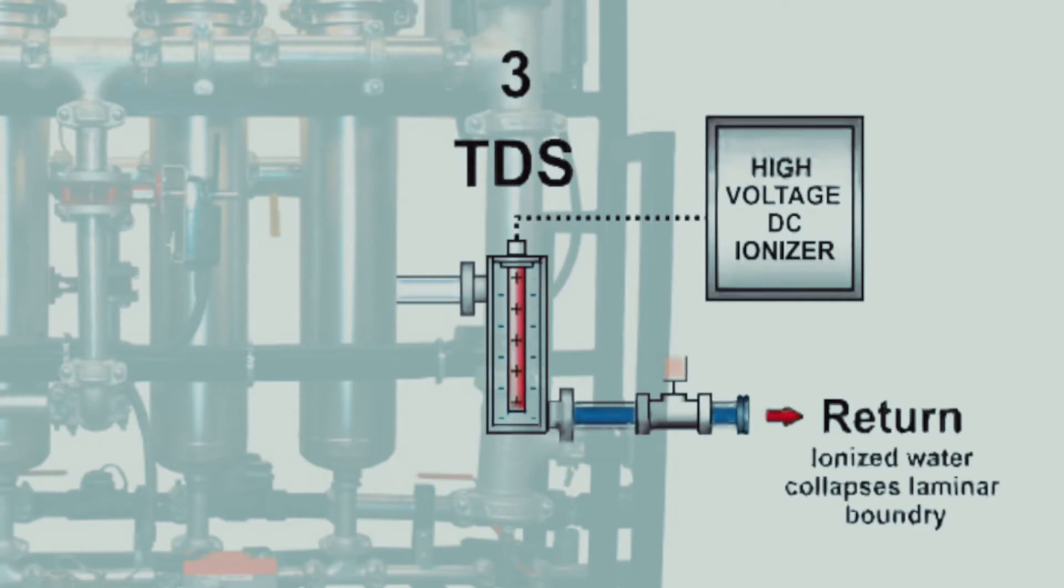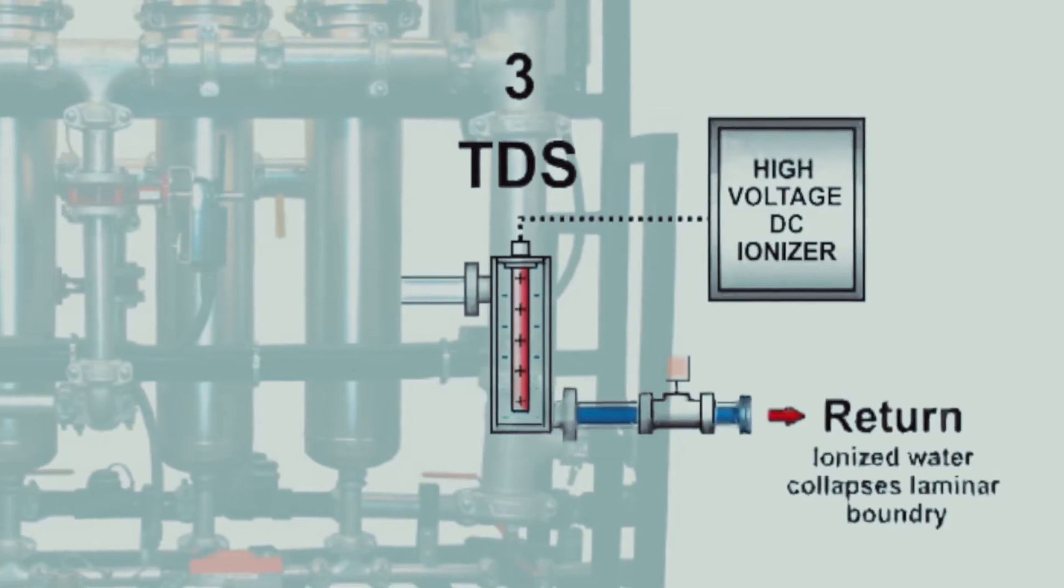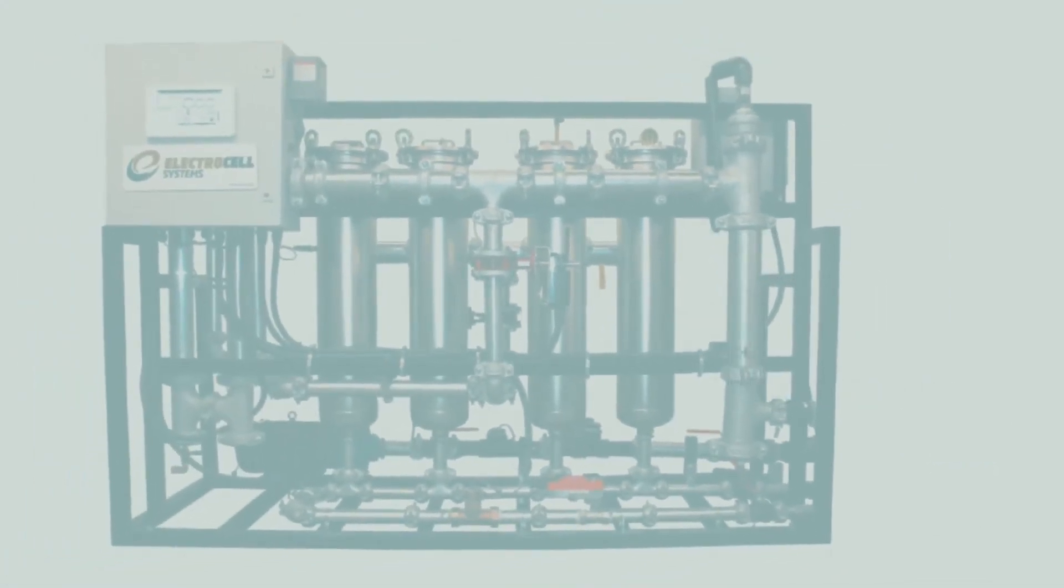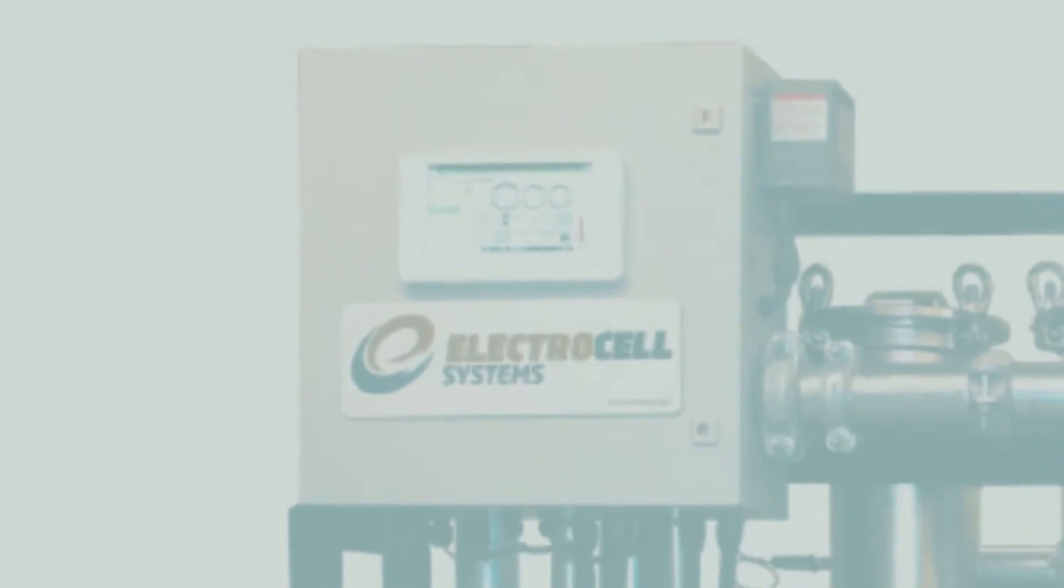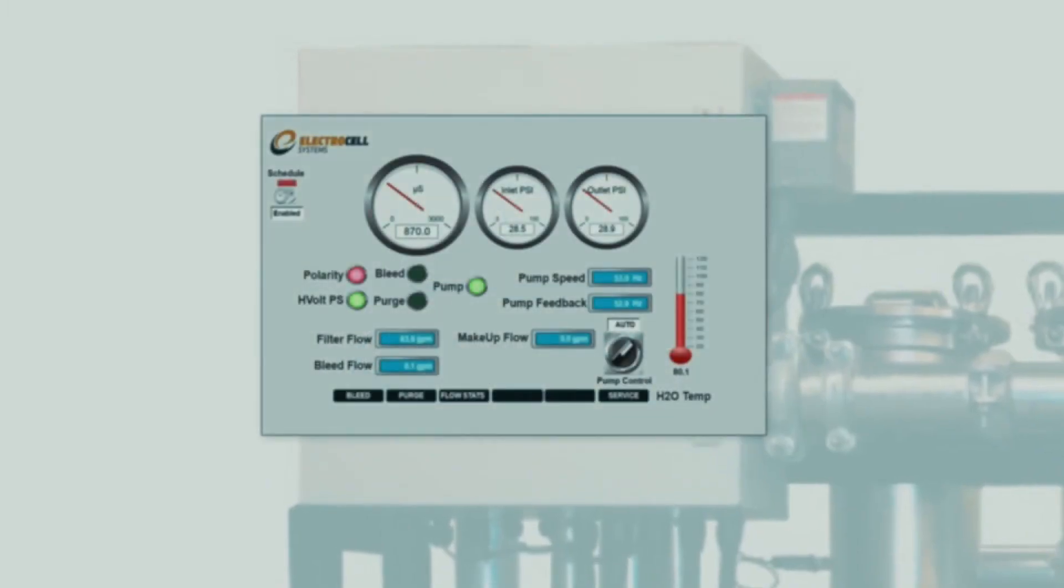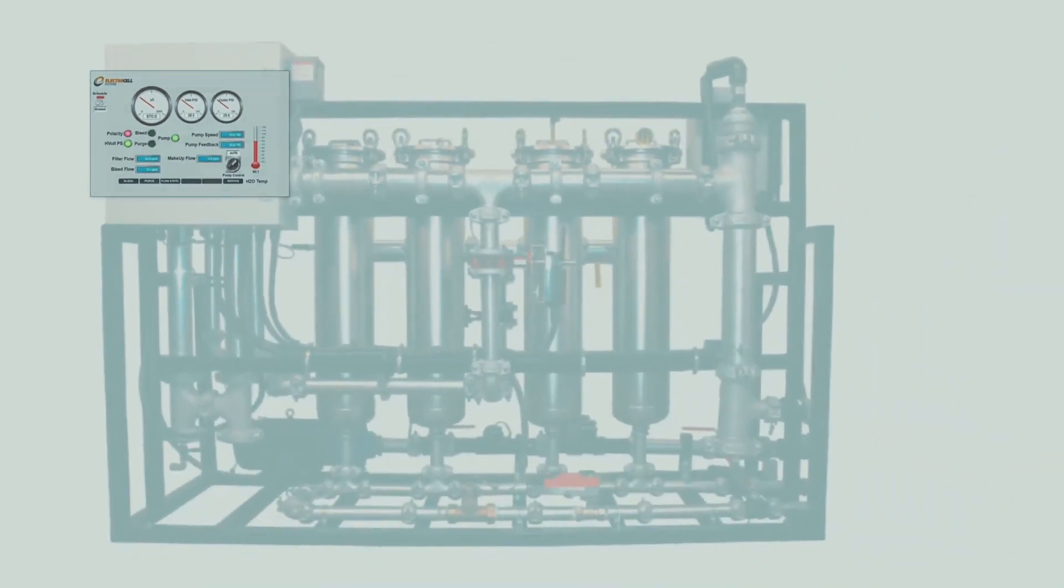The ElectroCell system's touchscreen monitor is user-friendly and fully automated. It includes alarms, trending graphics, controls, and flow totalizing, which can be integrated into your BACnet, LAN, or Modbus network. Additionally, ElectroCell offers remote proactive monitoring at its headquarters to observe the entire loop system's performance.